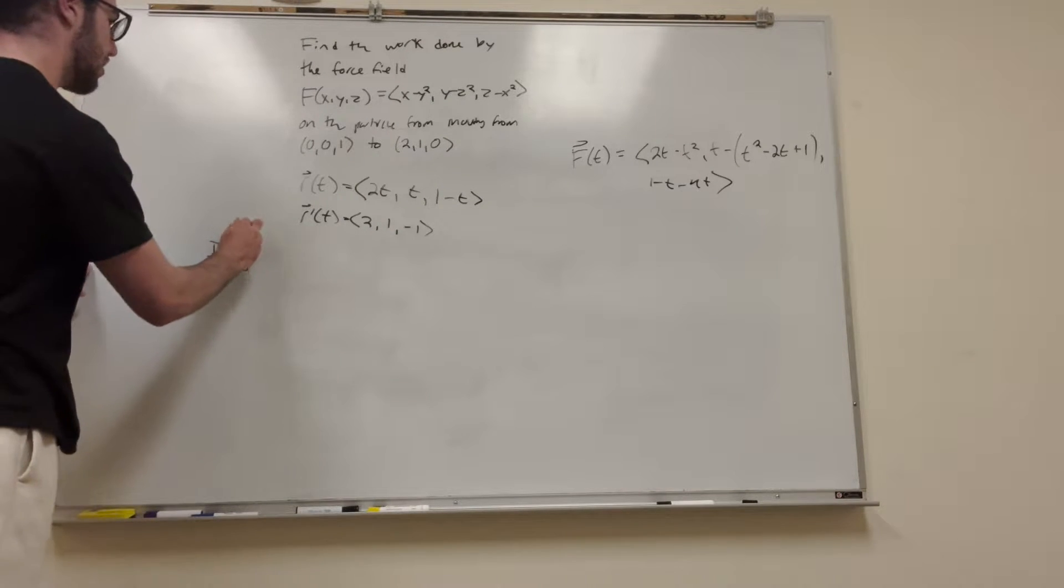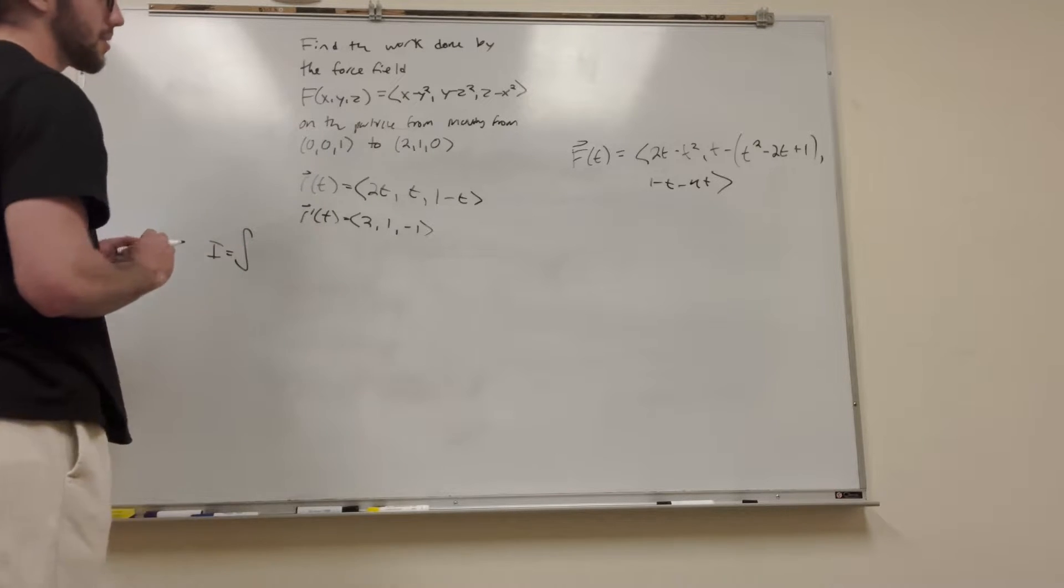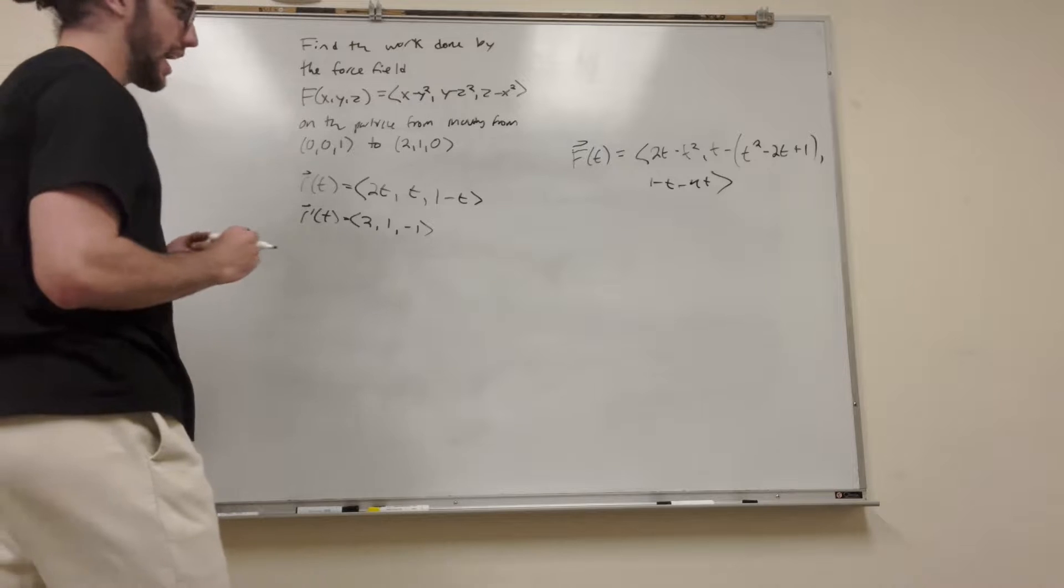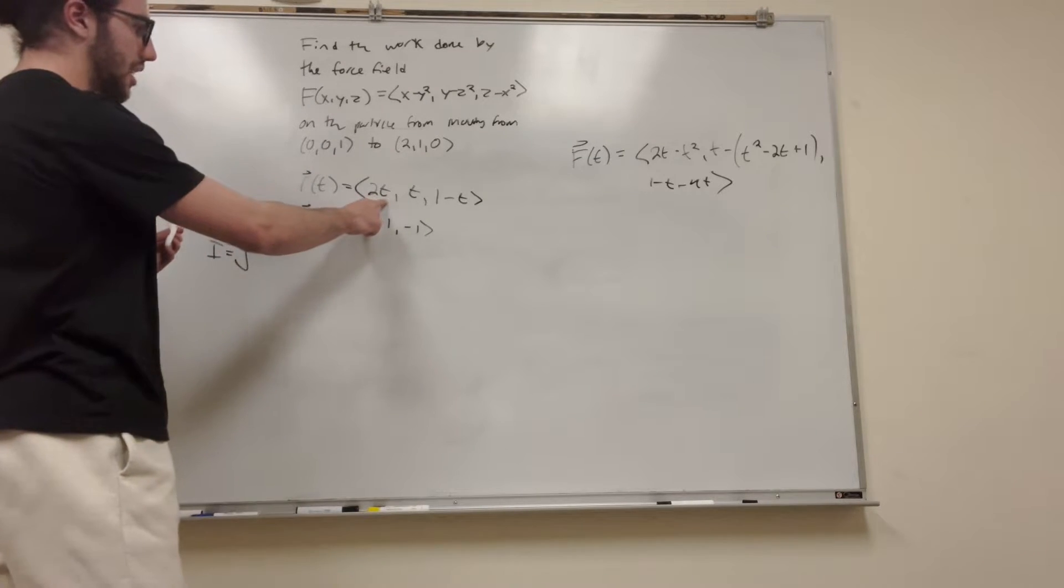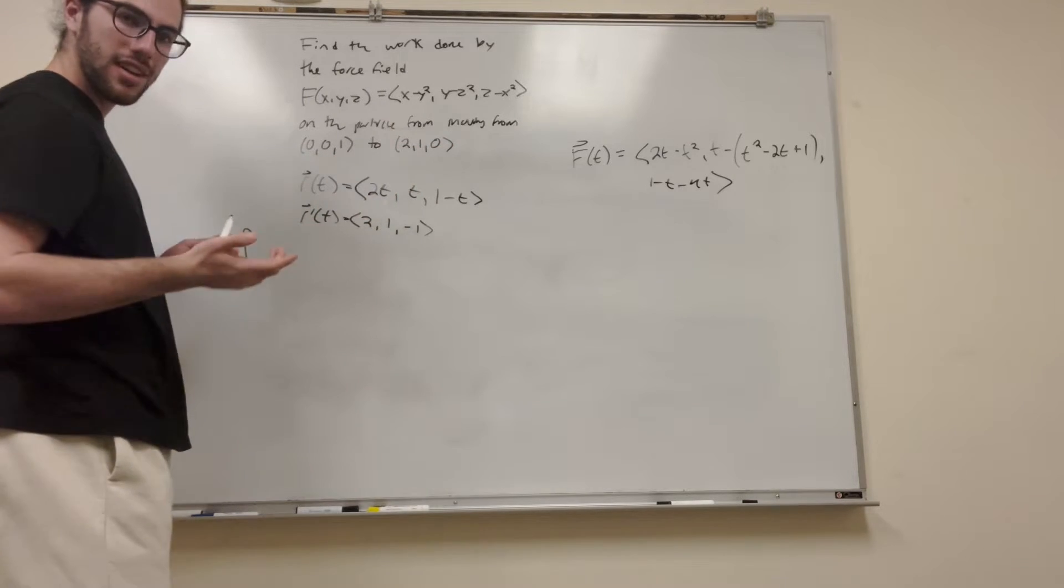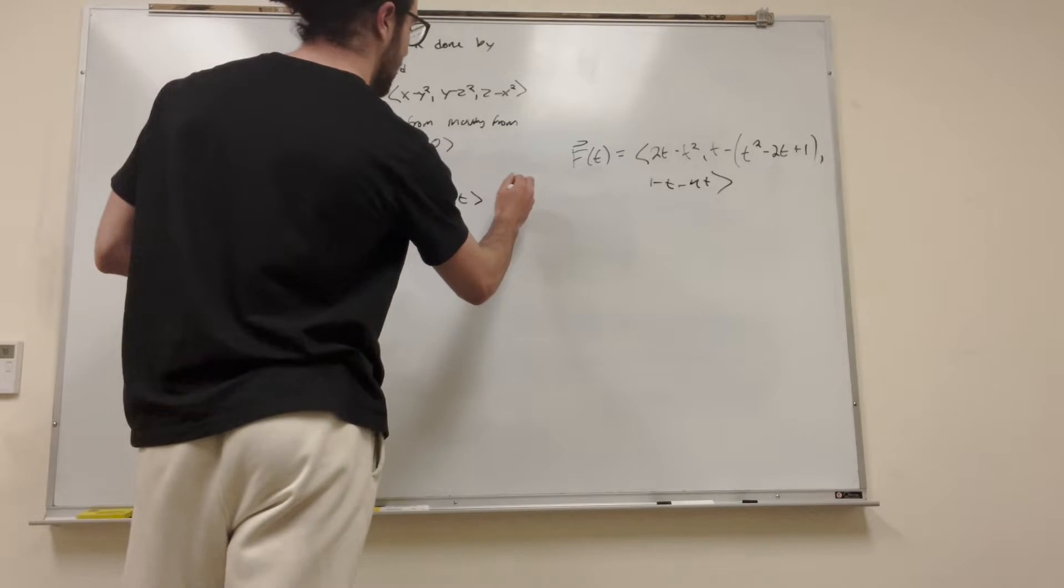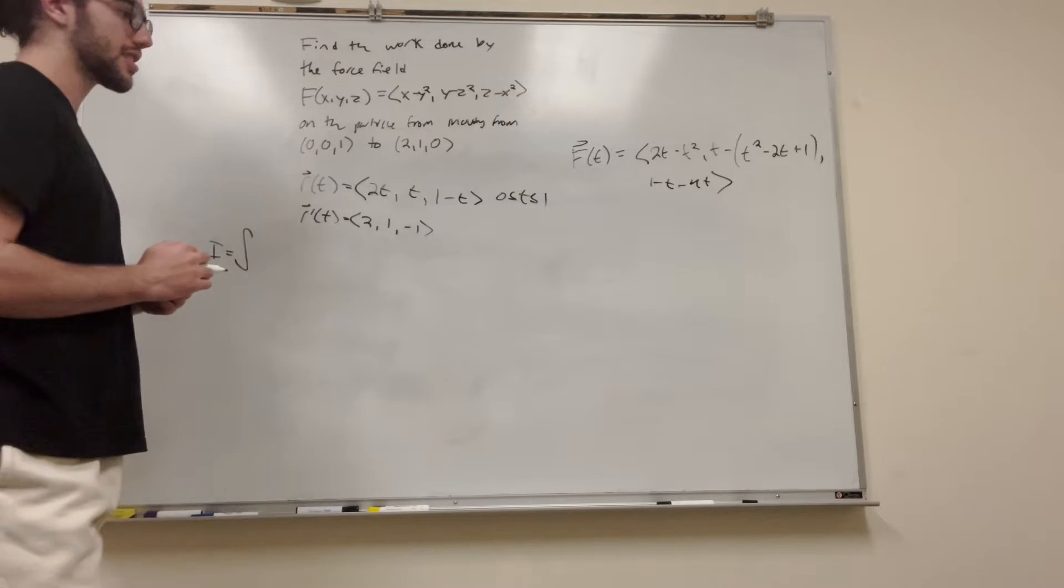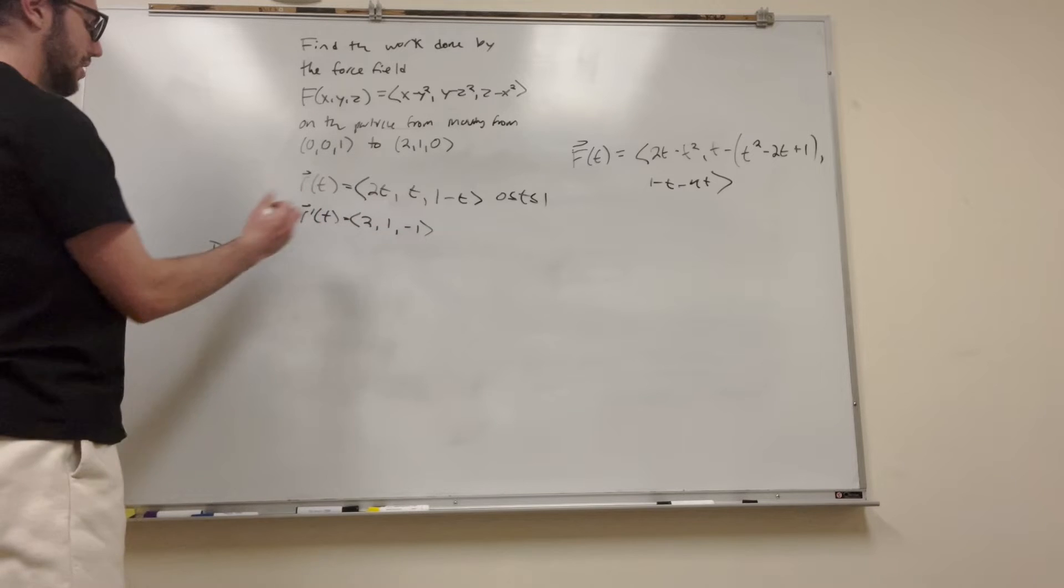So integral is going to be equal to. Oh, I forgot to include something important. When I made this, it goes from 0 to 1, right? T, you can see that if T is 0, you're going to get the 0, 0, 1, and if T is 1, you're going to get the 2, 1, 0, right? So you need to include, you need to always write this. Boom, T is less than, T is greater than 0, less than 1. And because you can use that for our integral now.